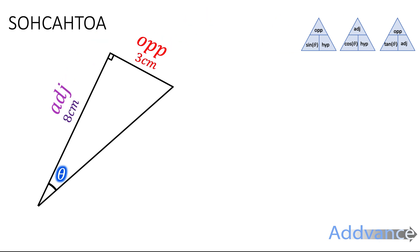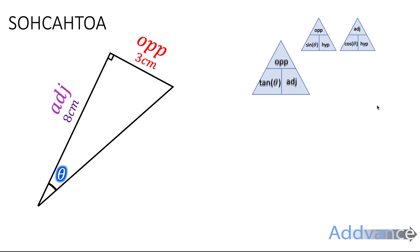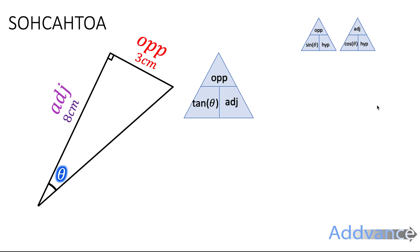So in example one, we're going to go straight in and label the sides we're given. We're given the opposite and we're given the adjacent, and we want to find this angle over here, theta. Theta is a symbol I use for angles. So which formula triangle do we use for opposite and adjacent? Well, it's the one that has opposite and adjacent, which is tan — opposite and adjacent. So tan of the angle is equal to opposite over the adjacent.